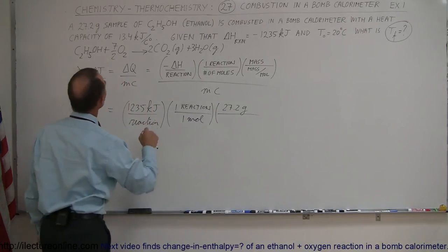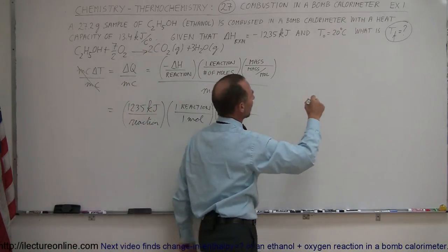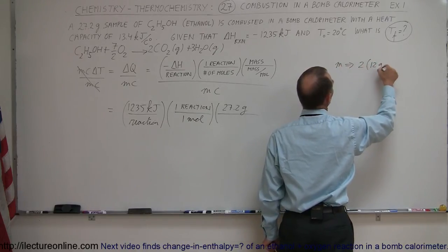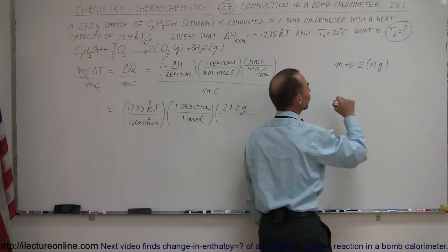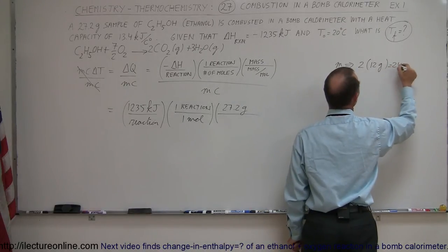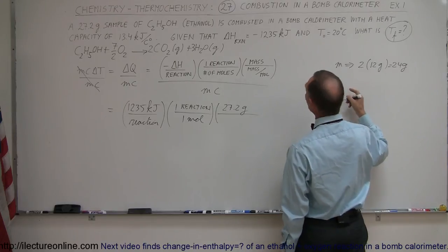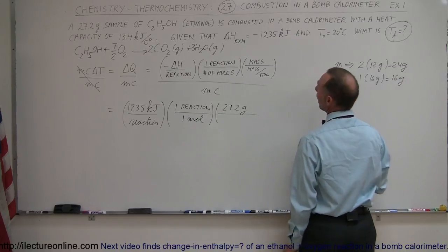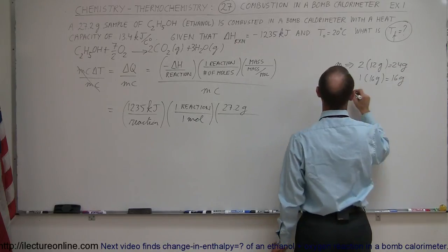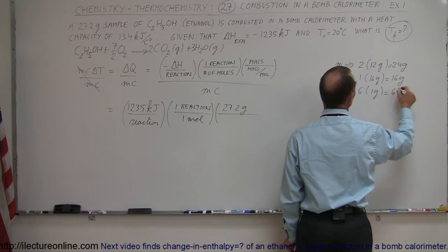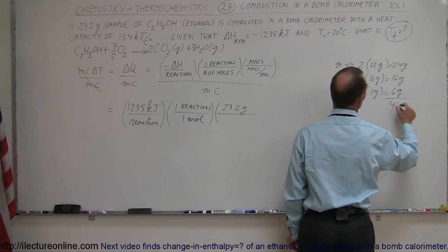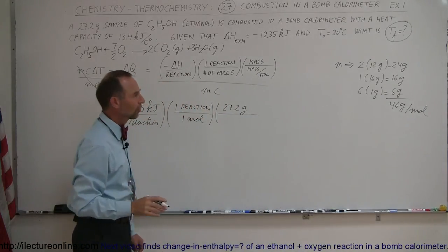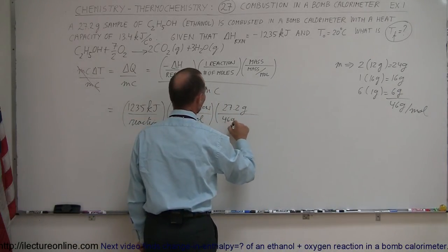The molar mass of ethanol: we have two carbons, so 2 times 12 grams, that's 24 grams for carbon. We have one oxygen, so 1 times 16 grams, that's 16 grams. We have 6 hydrogens, so 6 times 1 gram, that's 6 grams. Add it all together we get 46 grams per mole for the ethanol.